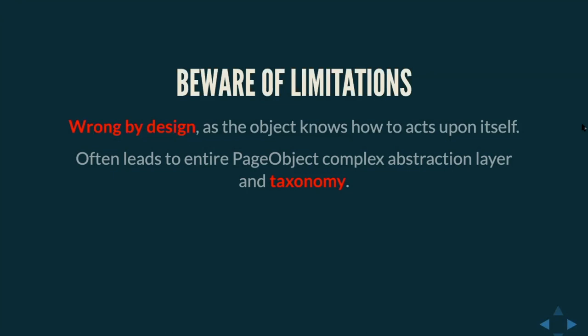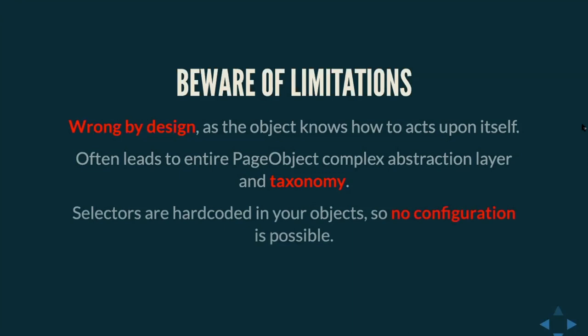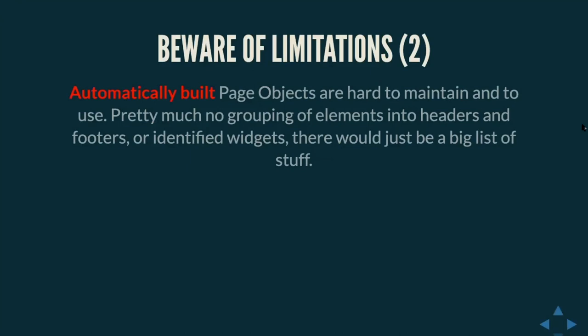Page objects create very complex and tight abstraction layers when it comes to taxonomy, because we need to always derive the commons from a base class which has a base class and then another base class — this is really poor practice; we need to work with composition, not inheritance. Another concern is that selectors are hard-coded inside our objects, making no room for configuration needed on different environments. There are also libraries that can automatically generate page objects, which is a bad idea because the maintenance becomes a nightmare: no grouping of elements, no headers, no footers, no containers — everything is put into one huge class.